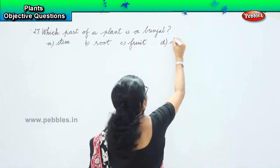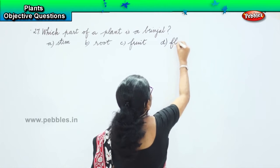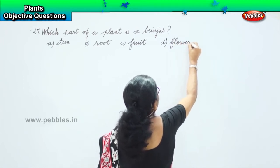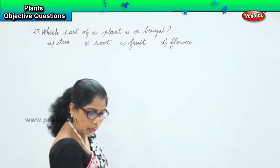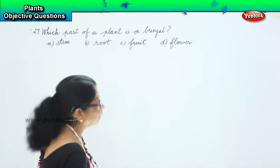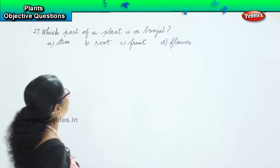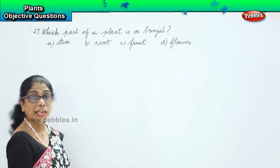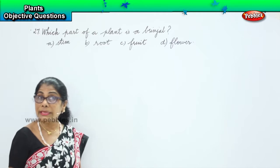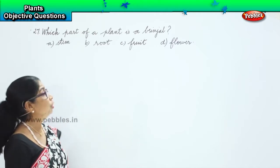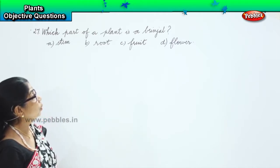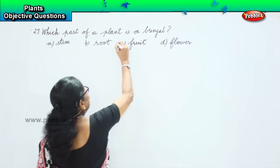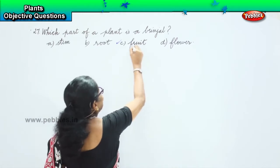Let us choose. They are asking us which part of a plant is a brinjal. Is it a stem? No. Is it a root? No. Is it a flower? No. Brinjal — the answer is C, it is a fruit.